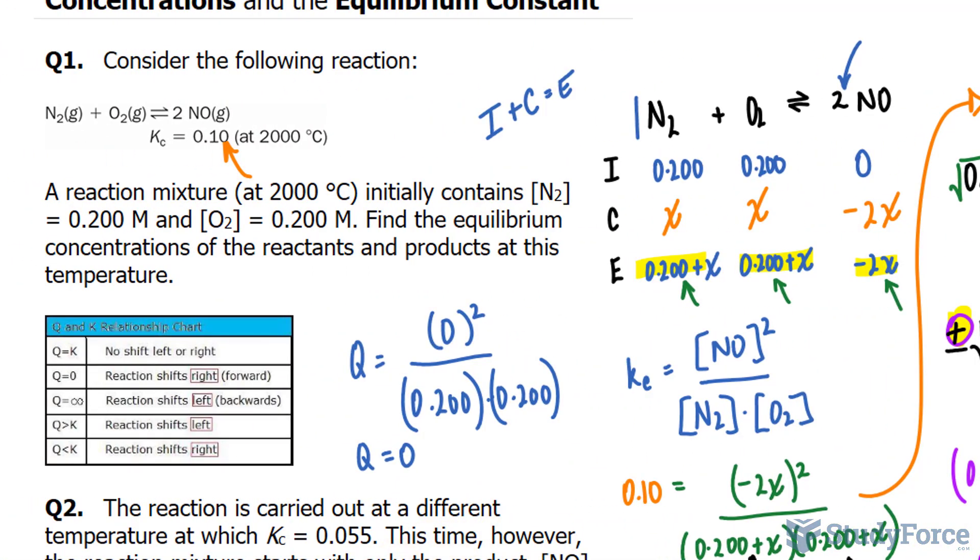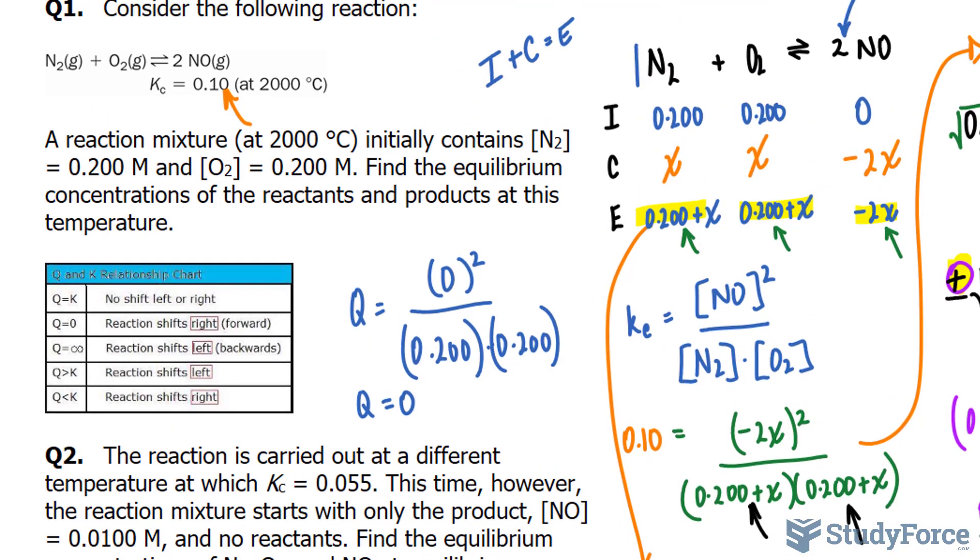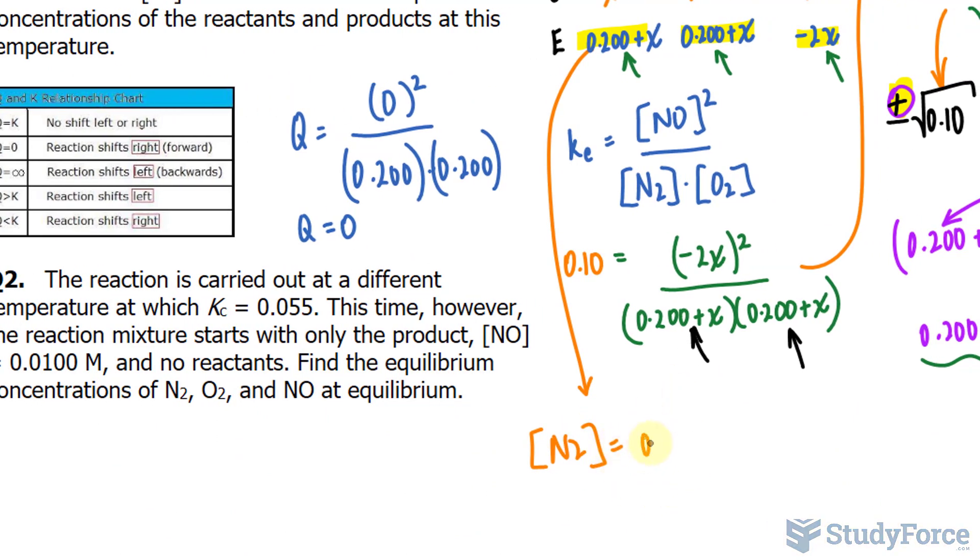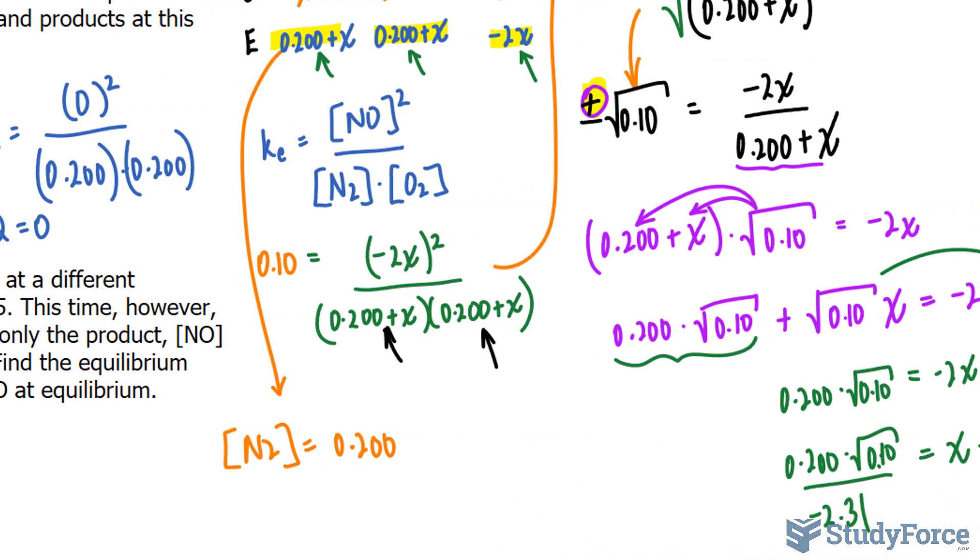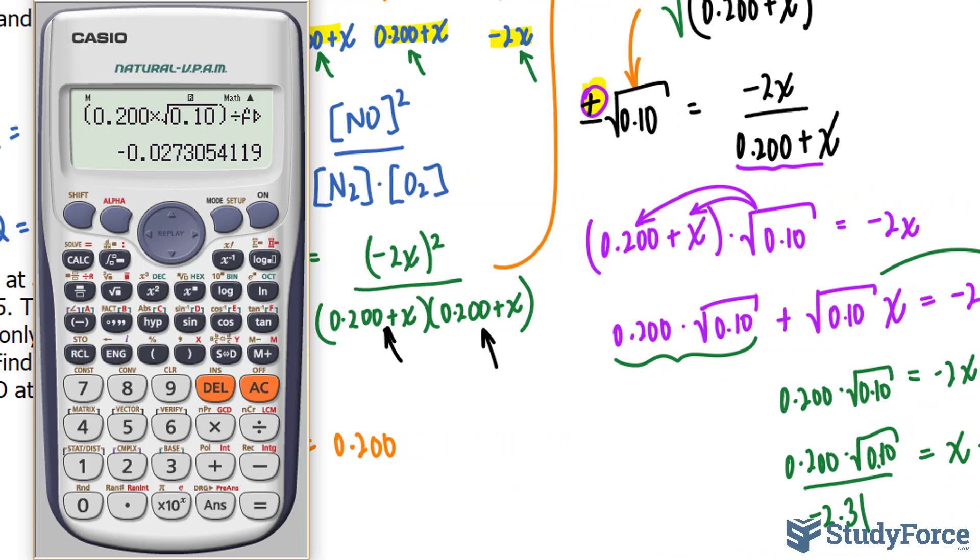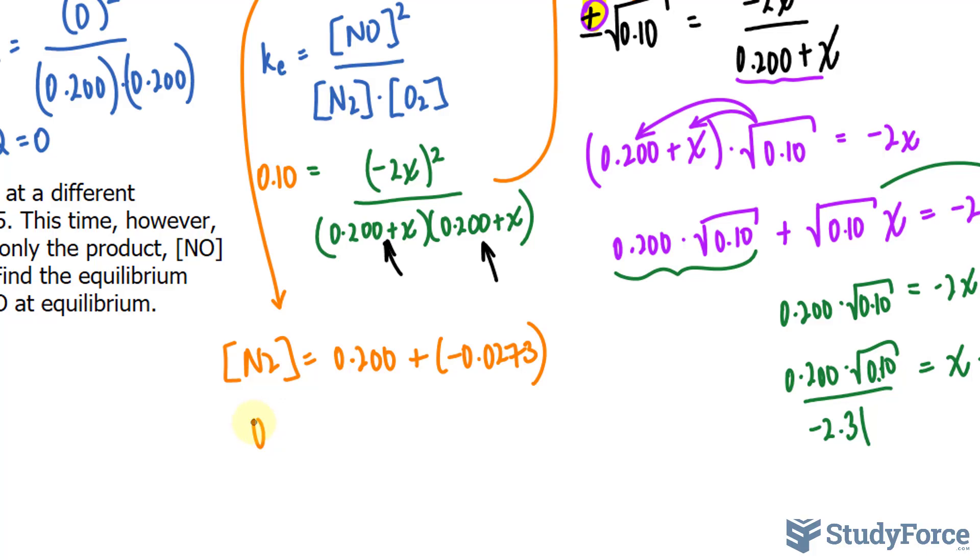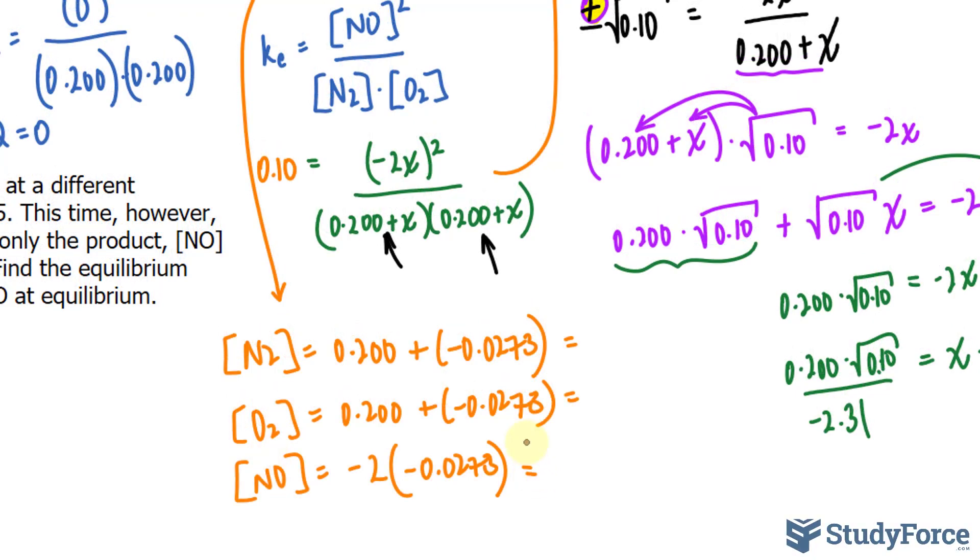So let's move on to the next step: find the equilibrium concentrations. I will now take each of those. The molecule N2: I'll take 0.200 and add it to the X value that we found of negative 0.0273. And the same thing for the next molecule, O2, its concentration. And lastly, for NO. We end up with the following values, and all of those are molars.